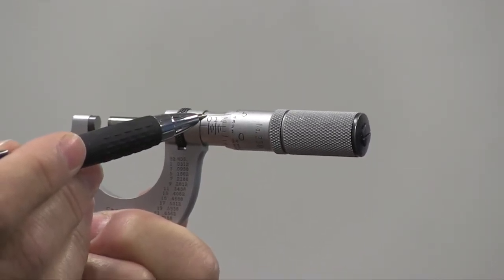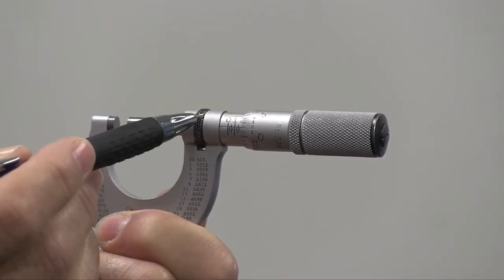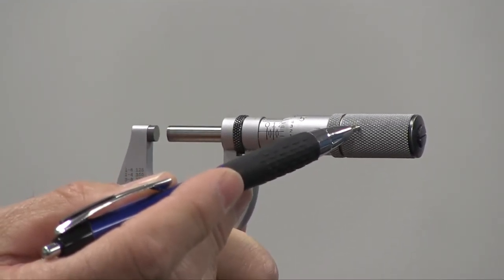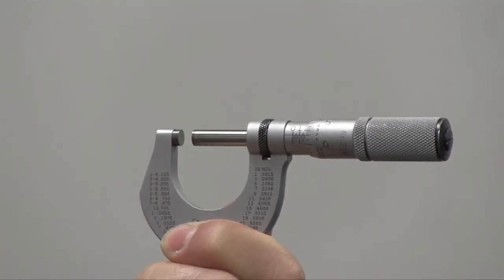And we have of course numbers, graduations on each of these. And here we have the friction thimble that allows us to take measurements equally from person to person.